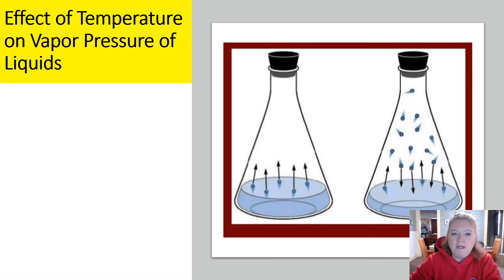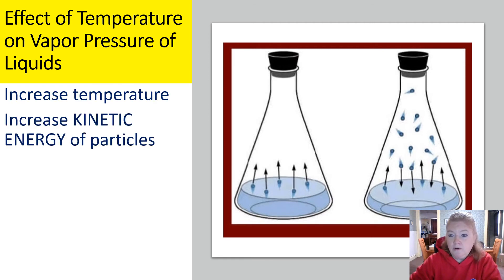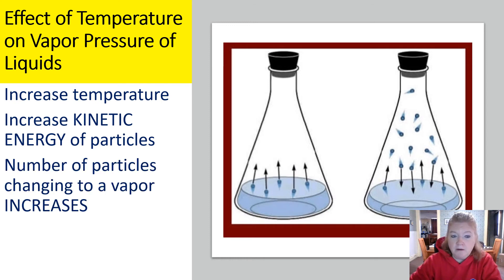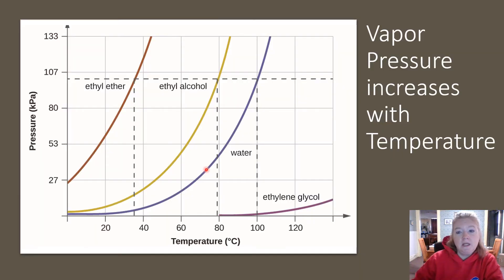What is the effect of temperature on vapor pressure? If we increase the temperature, we increase the kinetic energy of the particles. The number of particles changing to vapor increases, so the vapor pressure increases. You can see it on a graph of vapor pressure - as we increase temperature, vapor pressure increases.